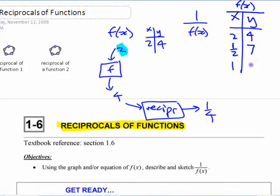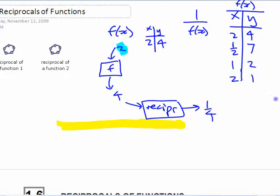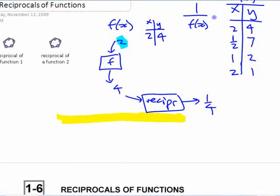And 1, 2, and 2, 1. All right, so let's look at what happens with that now. What happens with that if we look at 1 over f of x?